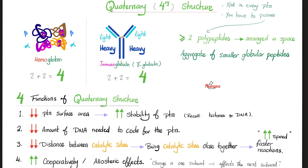Quaternary structure. Not in every protein. In order to have a quaternary structure, you need to possess 2 or more polypeptides arranged in space. They aggregate to form these lovely shapes, such as the hemoglobin with 2 alpha chains and 2 beta chains, or the immunoglobulin with 2 heavy chains and 2 light chains. Why do we need quaternary structure? Because they serve 4 functions.